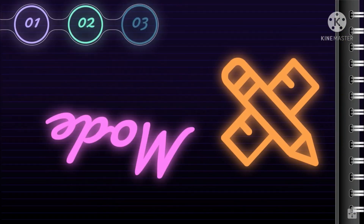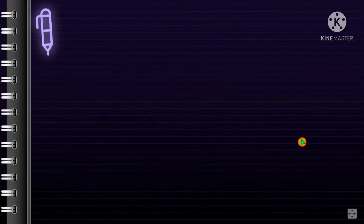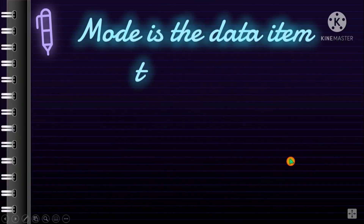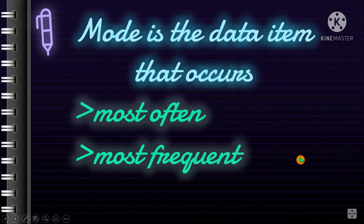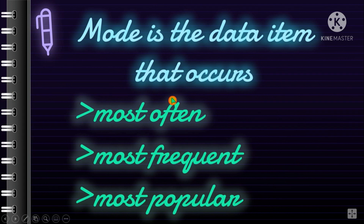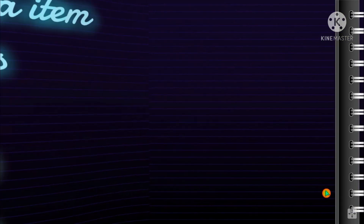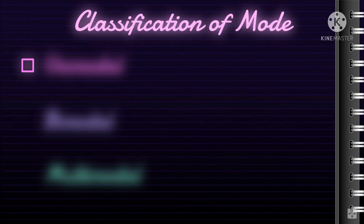Next, let's have the mode. The mode is the data item that occurs most often — the most frequent or most popular value. You don't really compute for the mode; you just look at your data and find which value appears the most. That value is your mode.